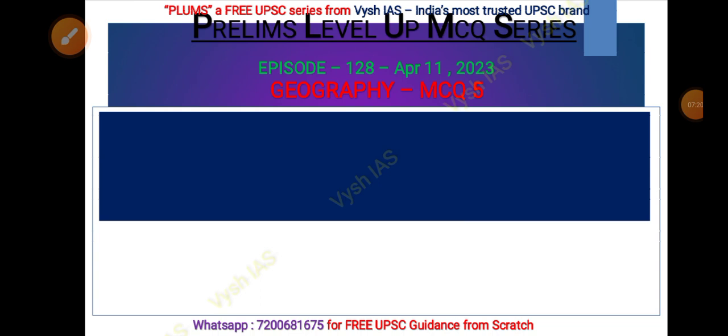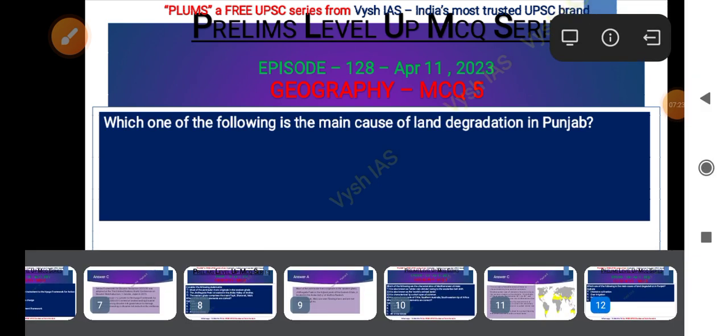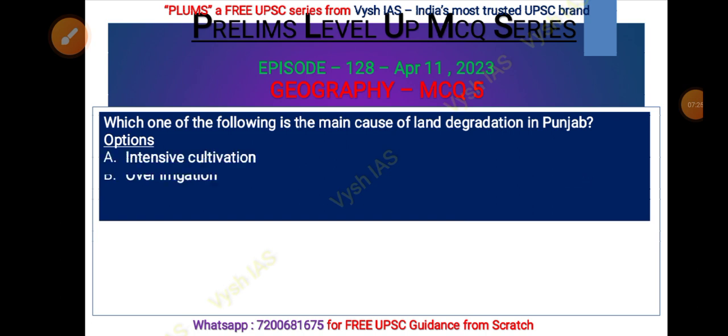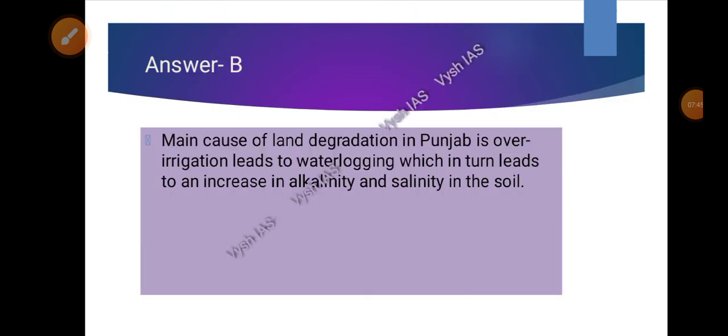The fifth MCQ: which of the following is the main cause of land degradation in the state of Punjab, India? Options: intensive cultivation, over-irrigation, deforestation, or overgrazing. The answer is over-irrigation. Land degradation in Punjab is due to over-irrigation, which causes waterlogging. This turns the land alkaline and increases salinity in the soil.